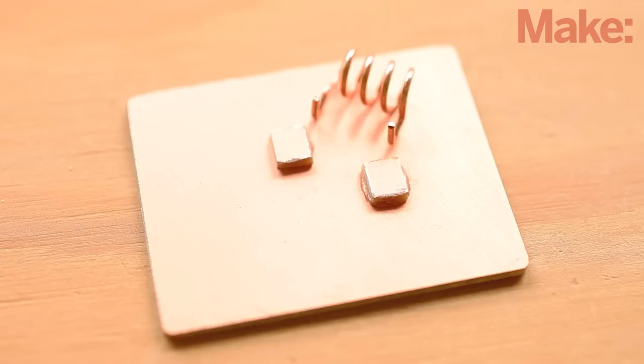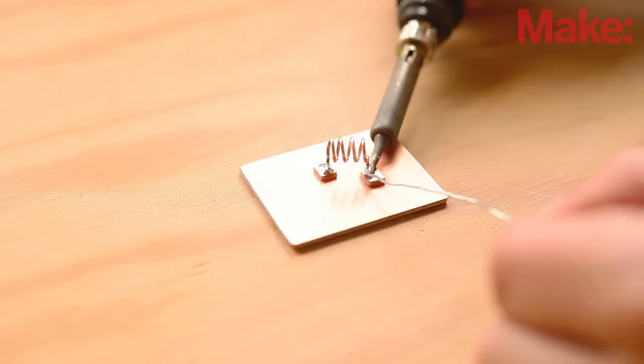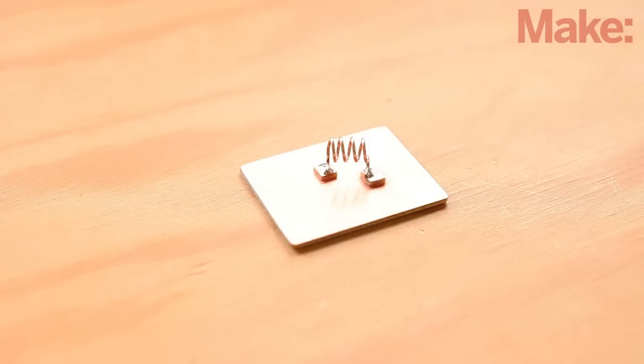These two pads should be 12 millimeters apart to match the coil. Now you can solder the coil across these two pads. It's easiest if you pre-tin the surface of the pads and both feet of the coil before making the connections.